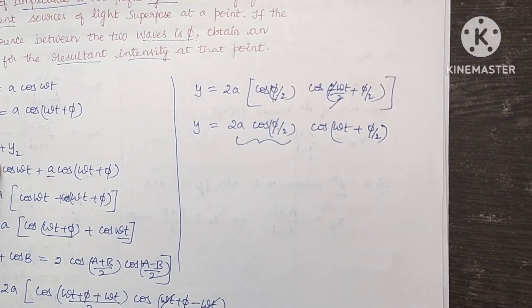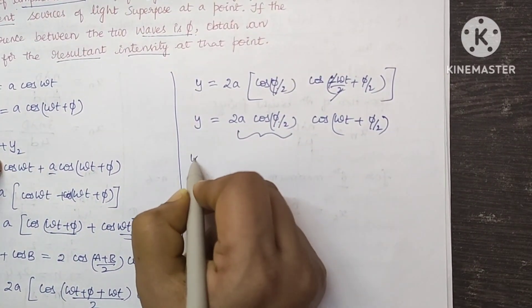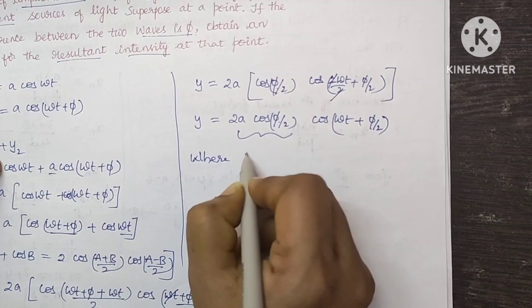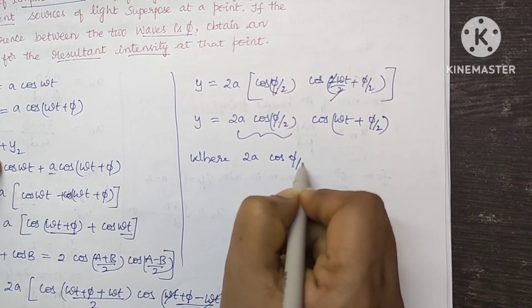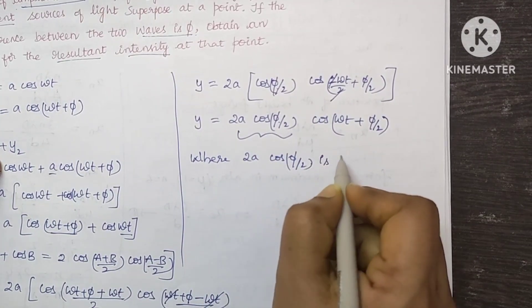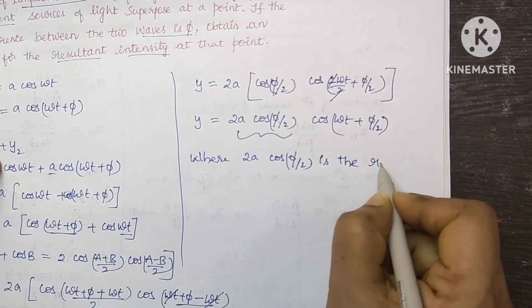So here this is the resultant amplitude, where 2A cos phi by 2 is the resultant amplitude.